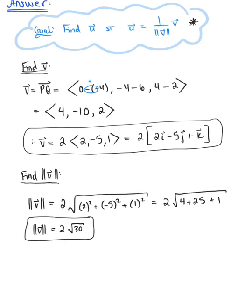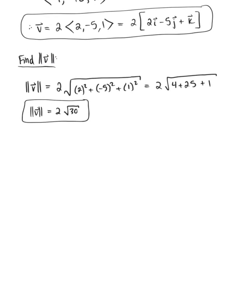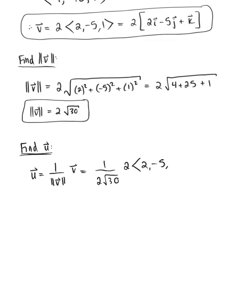We have everything we need to find a unit vector in the direction of this vector. Vector u is defined as 1 over the magnitude of vector v, multiplied by the components of vector v. So we have 1 over 2√30, multiplied by 2 times the vector (2, -5, 1). These 2s will cancel each other right out, leaving us with vector u equal to the scalar multiple 1 over √30, multiplied by the vector (2, -5, 1). There's nothing wrong with this answer — keeping that scalar multiple on the outside is perfect.